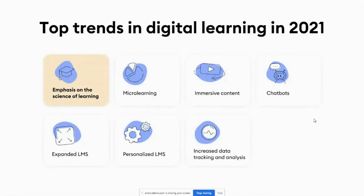The first point I would like to cover is the top trends in digital learning in 2021. Let's start with the emphasis on the science of learning. More and more learning professionals will base their work on learning science when developing training content, which will definitely enhance the quality of the content. And one of the sub-trends here is humanizing online learning. This trend will influence the quality of the learning content.